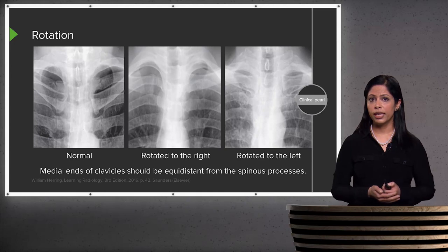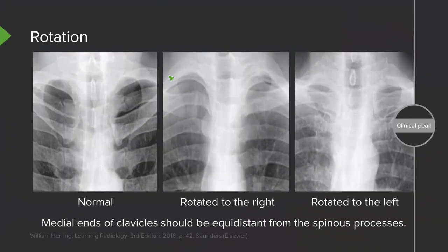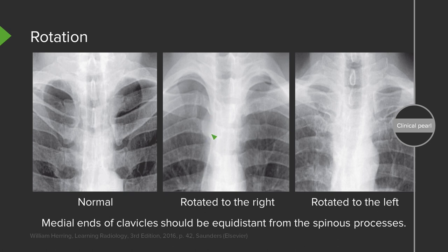To tell whether a patient is rotated, the easiest way is to look at the medial ends of the clavicles — they should be equidistant from the spinous process. On this first film, here is the medial end of the right clavicle and here is the medial end of the left clavicle. The spinous processes are in the midline, and this normal film is equidistant from them. If a patient is rotated to the right, there is more space between the right clavicle and the spinous process than between the spinous process and the left clavicle, and it can look like there's a mass projecting on that side — but that's just the mediastinal structures turning toward the side of rotation.